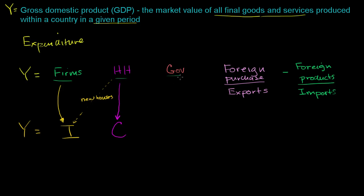And then everything that the government spends on — whether it's the military, salaries for police, the grounds keeping at the White House, whatever else if we're thinking about the US — that goes straight to G, government spending. And this thing right over here: you have foreign purchases (exports) minus foreign imports. So you have exports minus imports, which you could view as net exports.